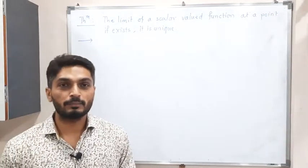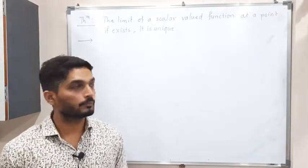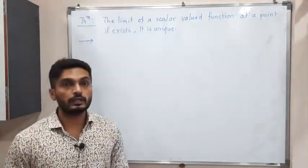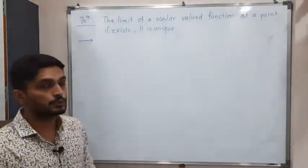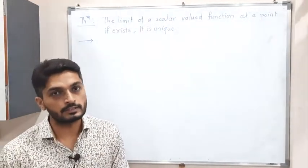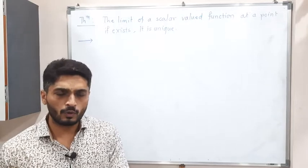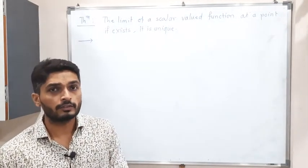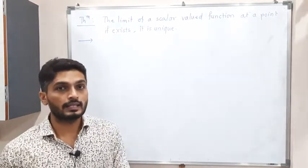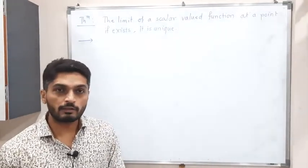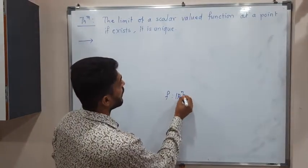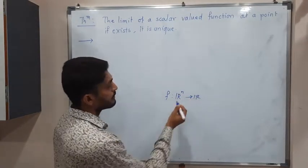Let us discuss this very important theorem of a scalar field. We have to prove that if the limit of a scalar-valued function at point a exists, then it is unique. This is actually true for any real-valued or vector-valued function, but now we are going to prove it for scalar-valued functions. A scalar-valued function means a function from ℝⁿ to ℝ, or from a subset of ℝⁿ to ℝ.